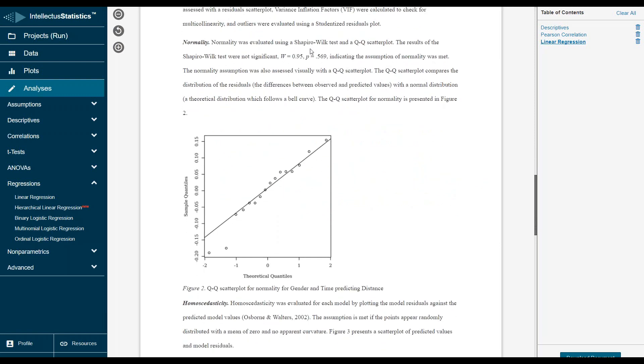It preloads the assumptions. You can see that the Shapiro-Wilk and QQ plot are the two ways of assessing it. The Shapiro-Wilk was not significant, which indicates that the assumption of normality was met. The other way to look at it is with the QQ scatter plot.